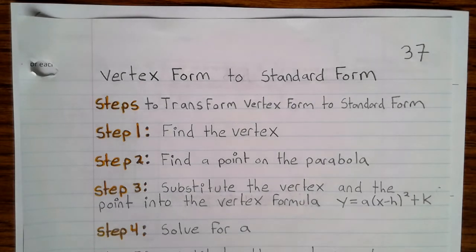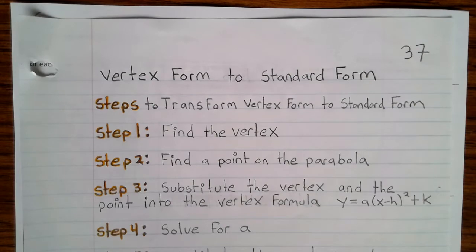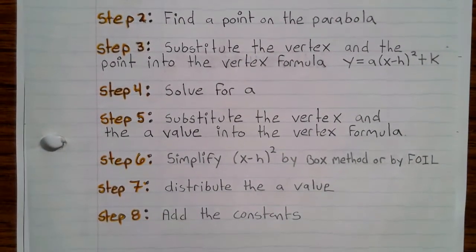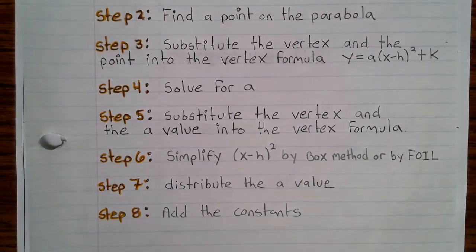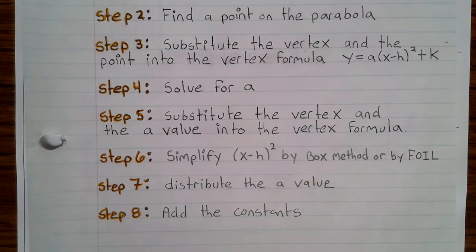Step 1: Find the vertex. Step 2: Find the point on the parabola. Step 3: Substitute the vertex and the point into the vertex formula y equals a(x minus h) squared plus k. Step 4: Solve for a. Step 5: Substitute the vertex and the a value into the vertex formula. Step 6: Simplify x minus h squared by box method or by FOIL. Step 7: Distribute the a value. Step 8: Add the constants.